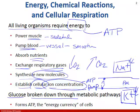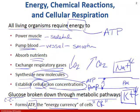Glucose, broken down through metabolic pathways — cellular respiration is the process — forms ATP, which is the energy currency of the cell. You're basically breaking the bonds of glucose, which has six carbons and a bunch of hydrogens and oxygens. Every time you break one of those bonds, you're taking the energy out and storing it in the bonds of ATP, specifically the phosphate bonds.